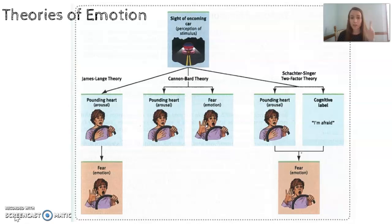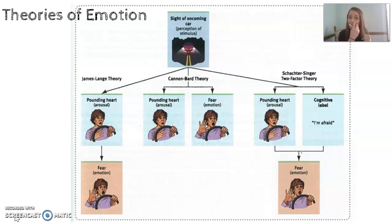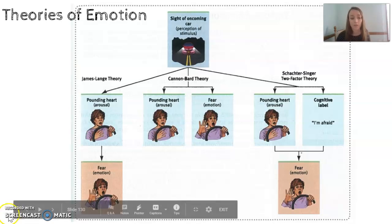I remember Schachter-Singer because it has two S's. Imagine opening the door to your house — lights are off, you hear a sound, your heart starts to race, and you have to make a cognitive assessment: Is this a surprise party? That's the first S. Am I happy? Or the second S — does someone need to save me? Is someone in my house going to hurt me? I have to assess the situation while my heart is racing before I know: am I surprised and happy, or am I scared and fearful? According to Schachter-Singer, your heart is racing while you're having a very fast cognitive assessment of the situation before you know how you're actually feeling.